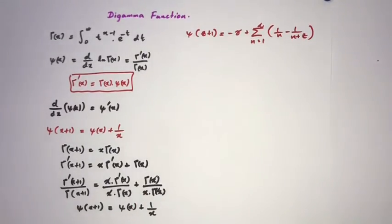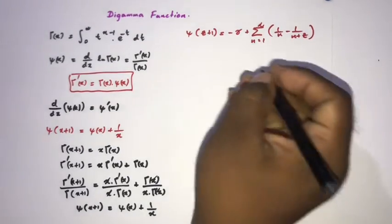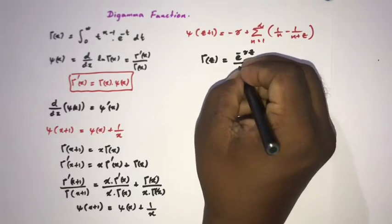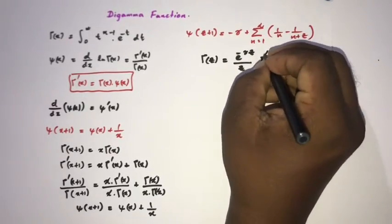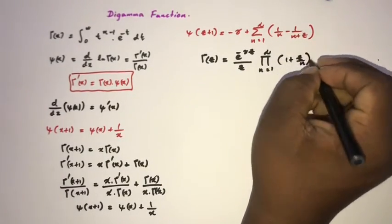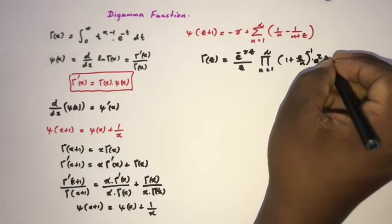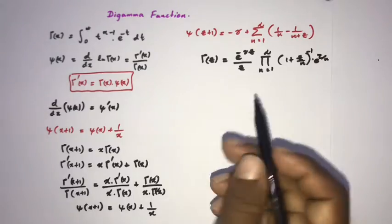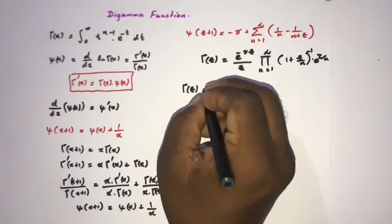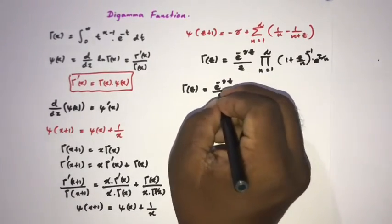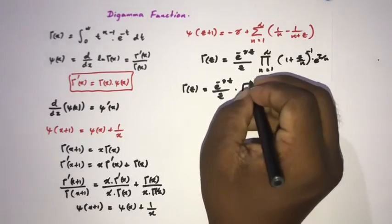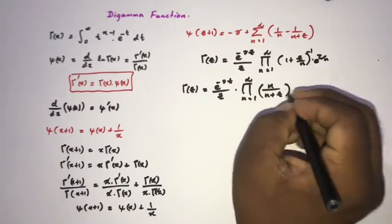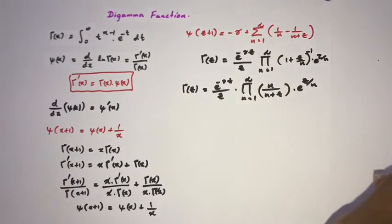To prove this, we use the Weierstrass product definition of the gamma function: Γ(c) = e^(−γc) / c · product from n=1 to infinity of (1 + c/n)^(−1) · e^(c/n). This can be rewritten as: Γ(c) = e^(−γc) / c · product from n=1 to infinity of n/(n+c) · e^(c/n). In a future video I will prove this product identity.